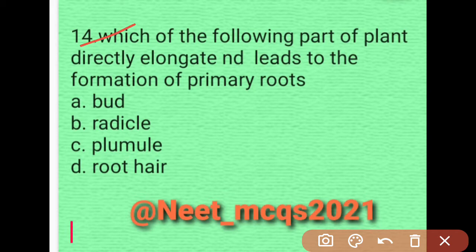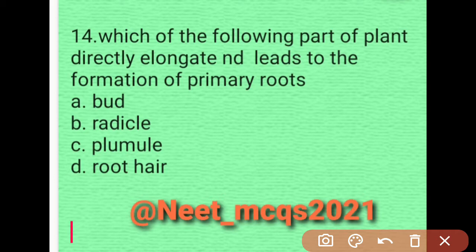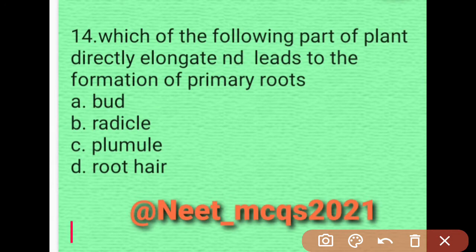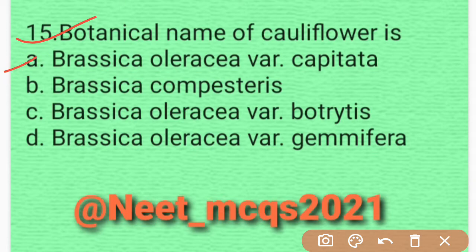Question 13: Which part of the plant directly elongates and leads to the formation of primary roots — bud, radical, plumule, or root hair? The radical is responsible. It is the part of the plant which directly elongates and leads to the formation of primary roots. Option B is correct.